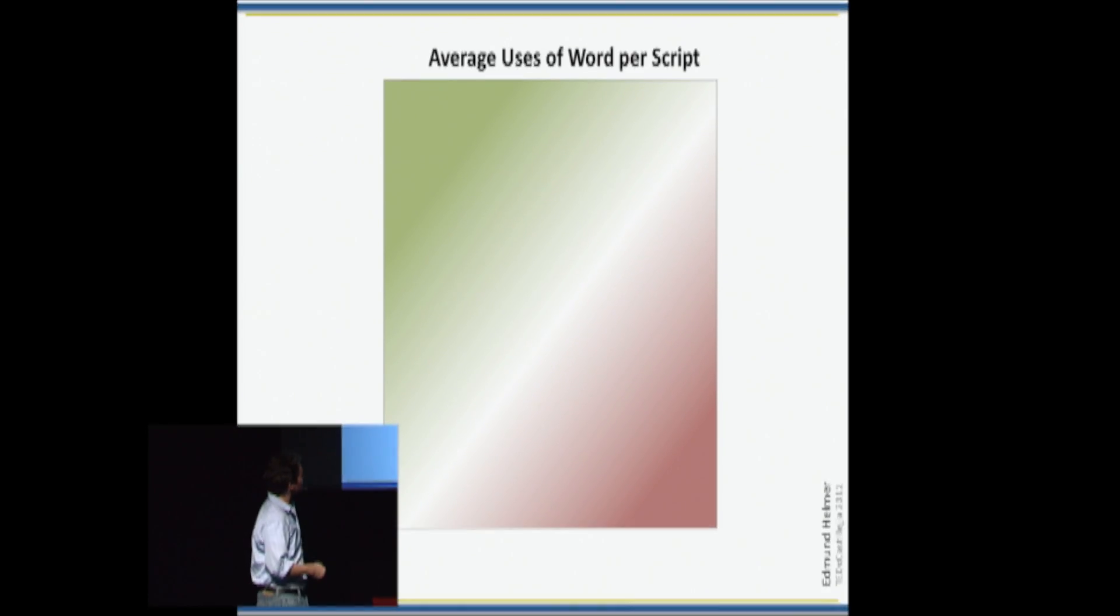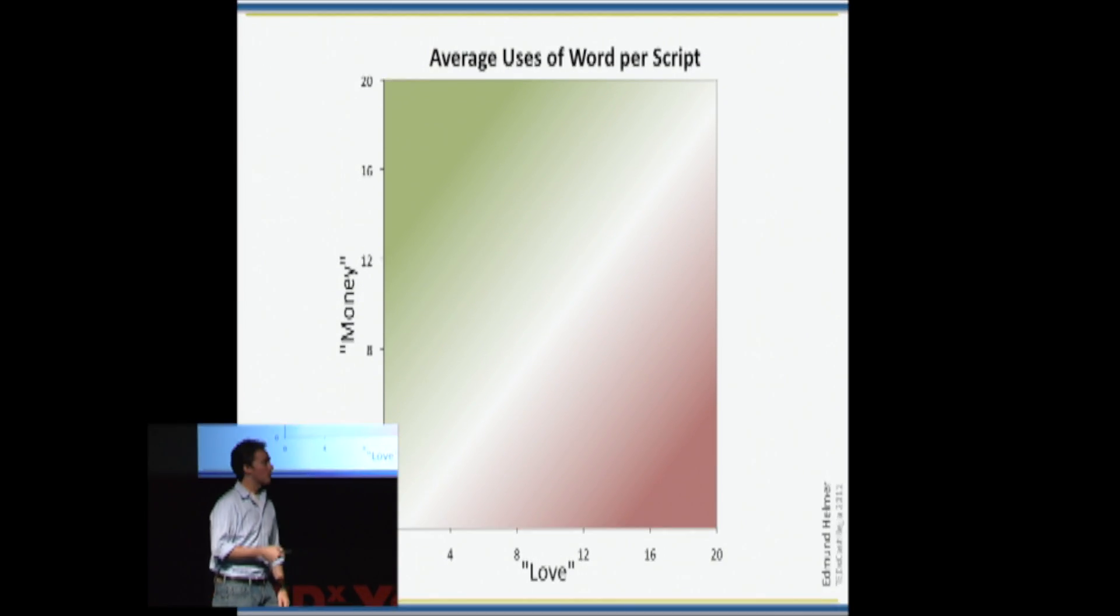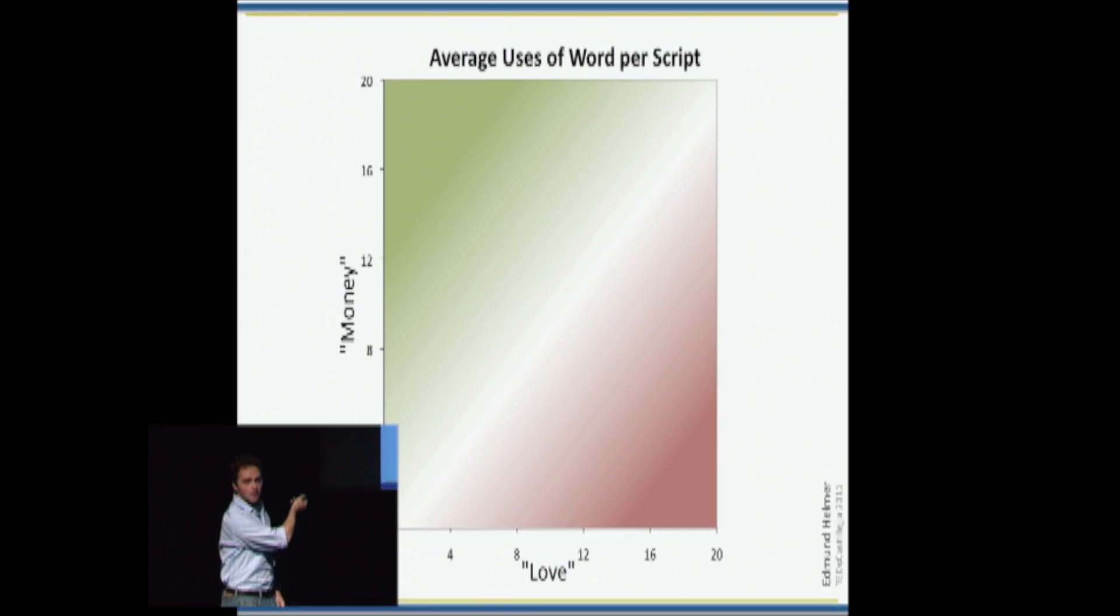I wanted to look at movie scripts. So I wanted to specifically count the number of certain words in the script. I wanted to think about love and money. Yeah, kind of describes a movie, right? Alright, so let's see how these showed up, categorized by genre.